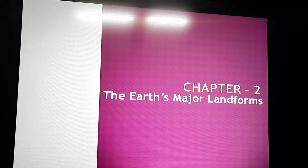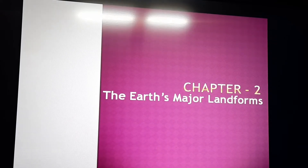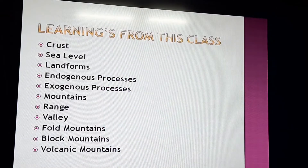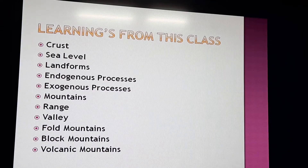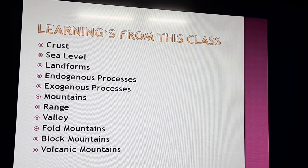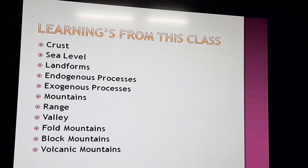First of all, we get to know what landforms are. Whatever things we have seen in the earth — like mountains, plateaus, plains — whatever natural structures are there, that is called a landform. The topics of today's class are: crust, sea level, landforms, endogenous processes, exogenous processes, mountains, range, valley, fold mountains, block mountains, and volcanic mountains.